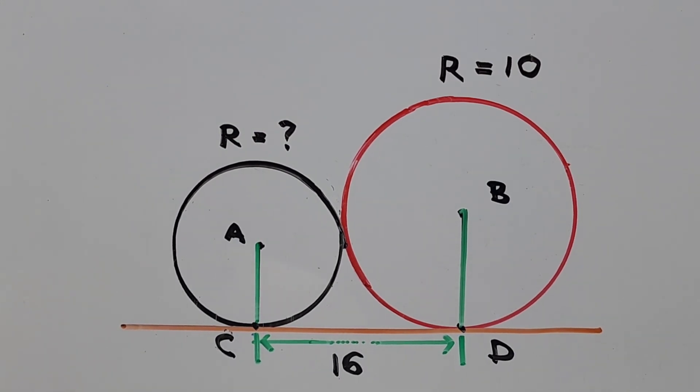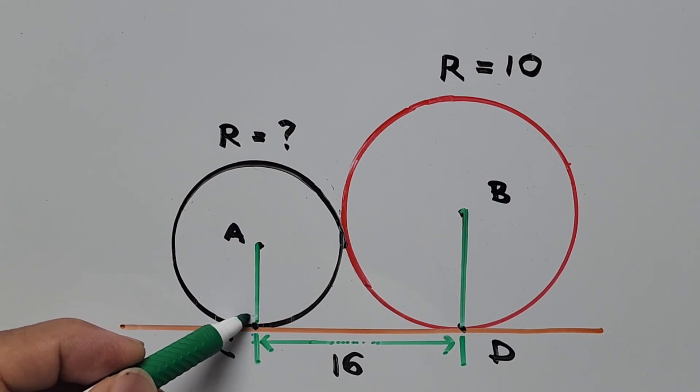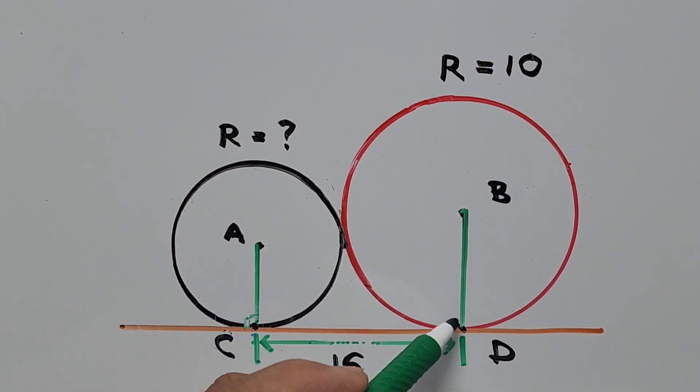Based on the circle theorem, the angle between the radius and the tangent is always 90 degrees, so this means this angle over here is 90 degrees. The same way on here.